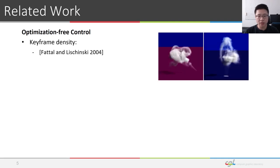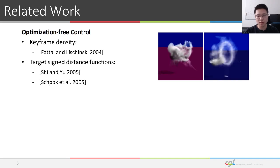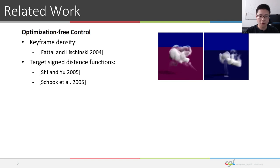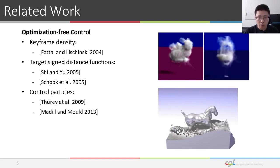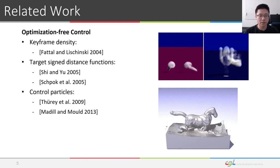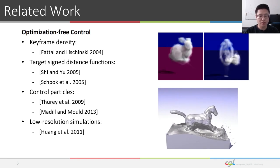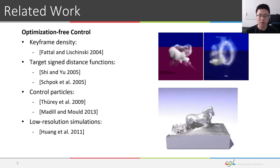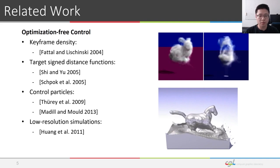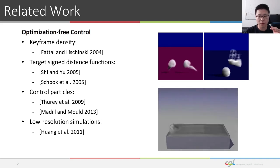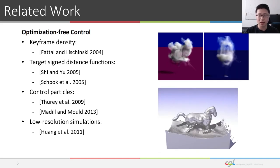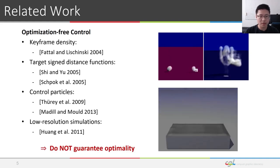The work of Fattel and Lintzeycki computes forces based on the difference between the target and current densities. Shi and Yu defines targets by representing object surfaces as implicit functions and impulse velocity constraints on the smoke boundary to match the smoke surface. Thierry et al. generates control particles which will guide the particle-based liquid simulations. Huang et al. defines the control forces in a low-resolution simulation grid. While these methods are efficient and require little or no optimization iterations, they do not guarantee that the target shapes will be matched because the force field computation does not take the whole sequence into account. So these methods neglect the optimality of the solution.